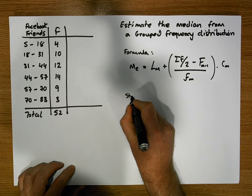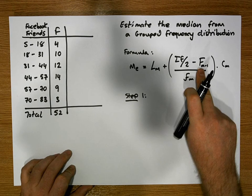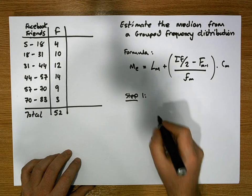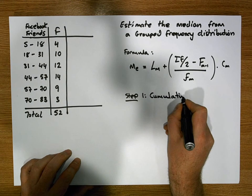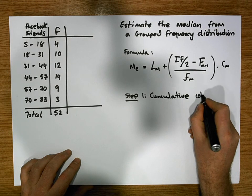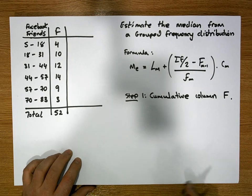Let's do the steps. Step one: the first thing we'll do is construct a cumulative frequency distribution, or we construct a cumulative column in our table. So that will be our capital F column.